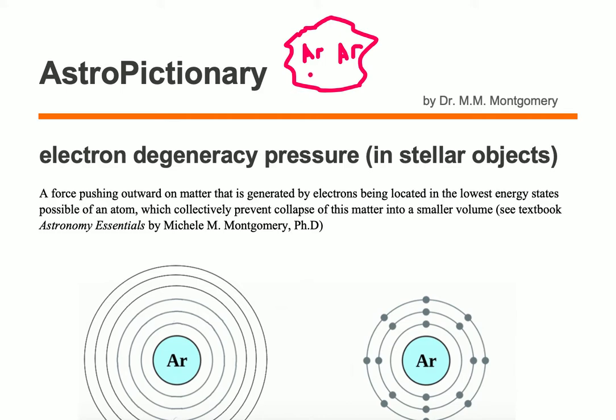We need some kind of pressure pushing out that prevents this object from collapsing further. So it's a force pushing outward which gives us our pressure, and it is generated by electrons being located in the lowest energy states possible of an atom.